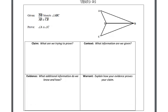In this problem, we're given that segment DB bisects angle ABC and side AB is congruent to side CB. We're trying to prove that angle A is congruent to angle C.